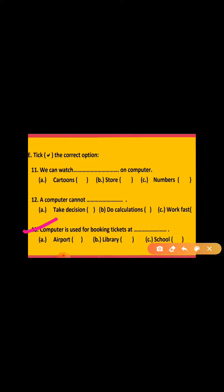13th is, computer is used for booking tickets at dash. Computer का यूज करके आप कहां tickets बुक कर सकते हैं? And your options are airport, second is library, third is school. So computer is used for booking tickets at airport. आप airport पे, computer का यूज करके ticket book कर सकते हैं.